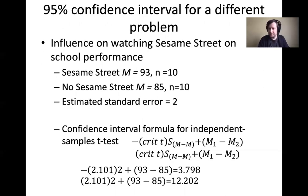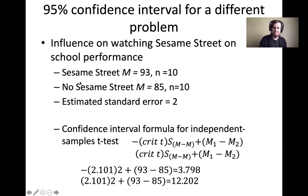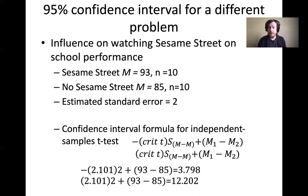Another example of a confidence interval for independent samples t-test. Kids that watched Sesame Street scored a sample mean of 93 on some school test — there are 10 kids. A different group that did not watch Sesame Street had a mean of 85 on the same test, also with a sample size of 10. Total sample size is 20, so degrees of freedom is 18 — either 20 minus 2, or (10 minus 1) plus (10 minus 1) equals 9 plus 9 equals 18. The estimated standard error is given as a nice round number: 2.